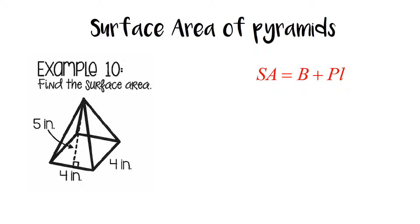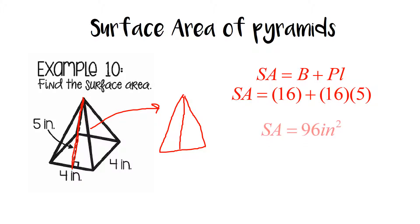And the perimeter is going to be 4 plus 4 plus 4 plus 4, and they already gave you the slant height on that edge. So if you're just looking at the triangle side, like this guy blown up, we're just finding the height of that triangle on the side, okay? So that's 5. They gave that to us. So we have 16 plus 16 times 5 for a total answer of 96 inches squared.